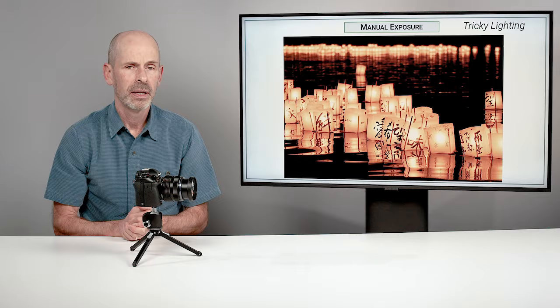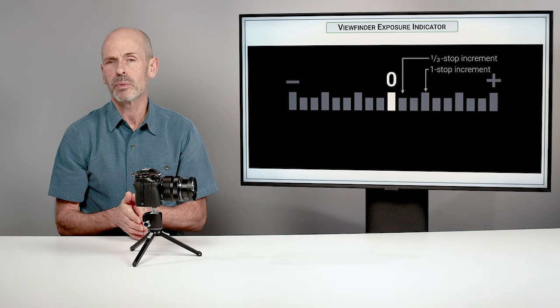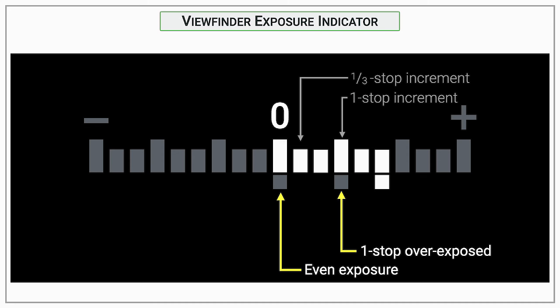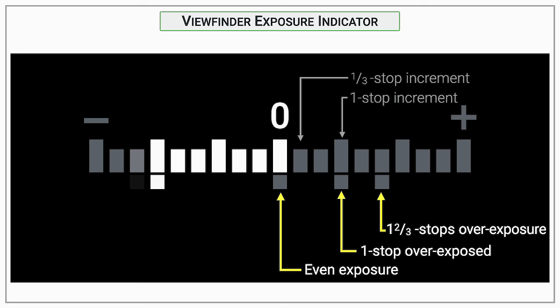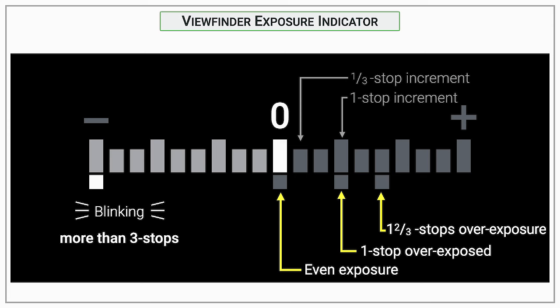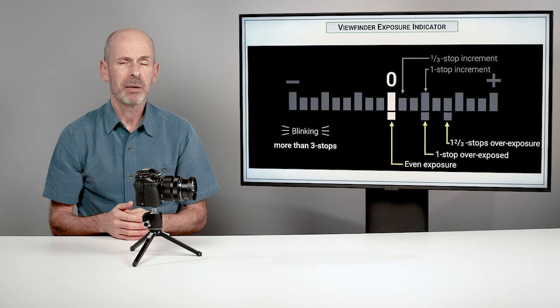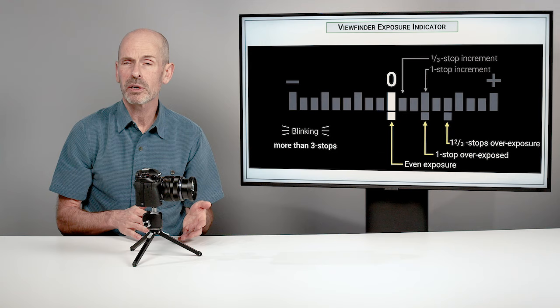When working with manual exposure, you'll use the exposure indicator, which shows a scale of over- and under-exposure broken down into third stops and one-stop increments. An even exposure at zero is a great place to start with your first exposure to see how it matches your subject. If you go too far off the scale, the camera will blink at you — more than three stops under or over. Start at the middle, take a look at it in playback, maybe check the histogram, and then decide if you want to overexpose or underexpose slightly.